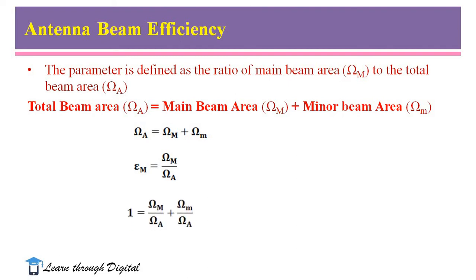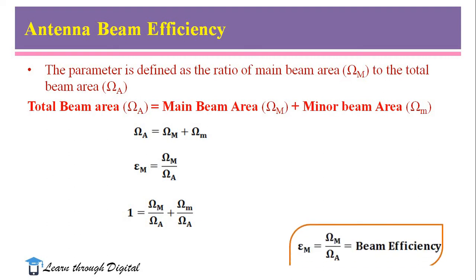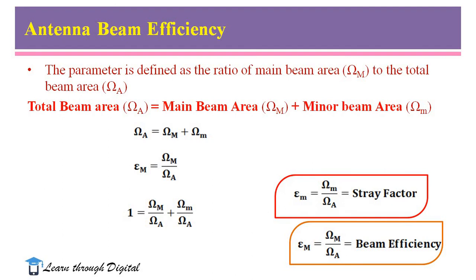Dividing the equation omega_A equals omega_M plus omega_m by omega_A, it simplifies to 1 equals omega_M over omega_A plus omega_m over omega_A. This is the sum of beam efficiency and the stray factor, where omega_M over omega_A is the beam efficiency — the ratio of main beam area to the total beam area. The stray factor, or deficiency, is the ratio of minor beam area to the total beam area. The sum of beam efficiency and the stray factor equals 1.